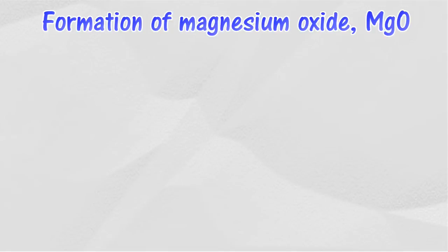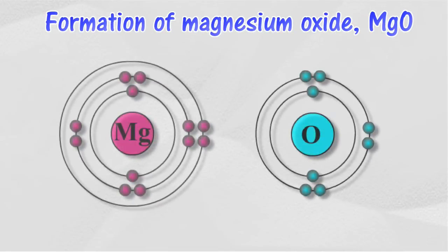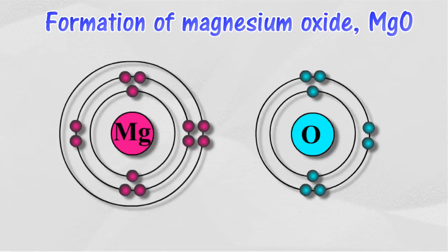Next, the formation of magnesium oxide, MgO. The electron arrangement of a magnesium atom is 2.8.2. The electron arrangement of an oxygen atom is 2.6.